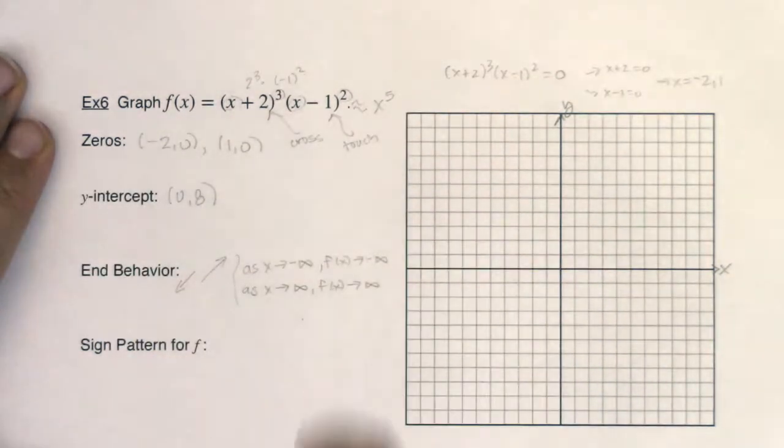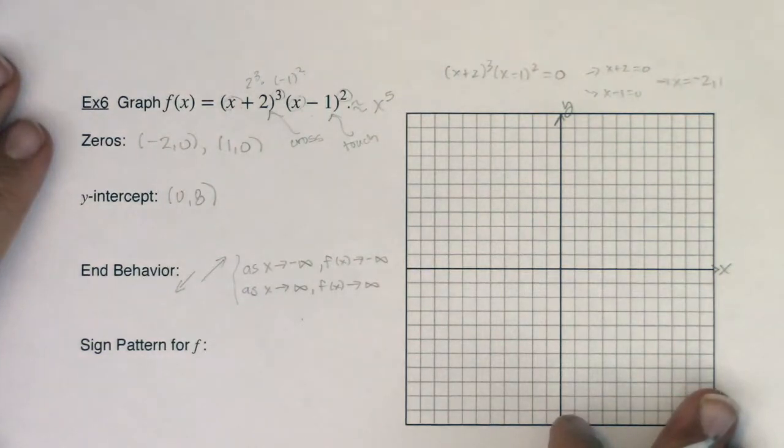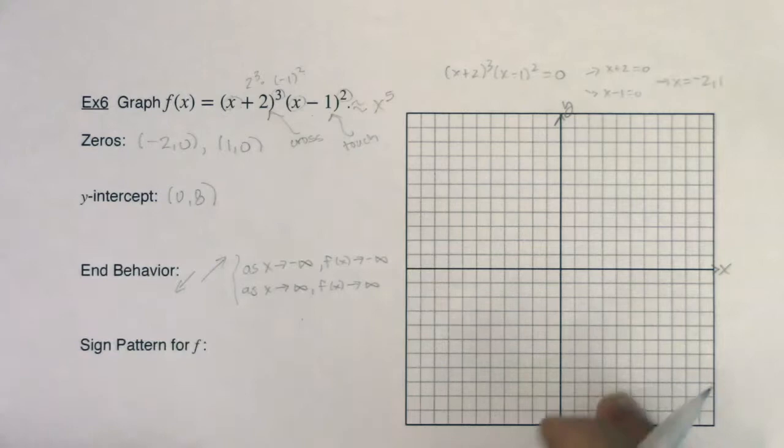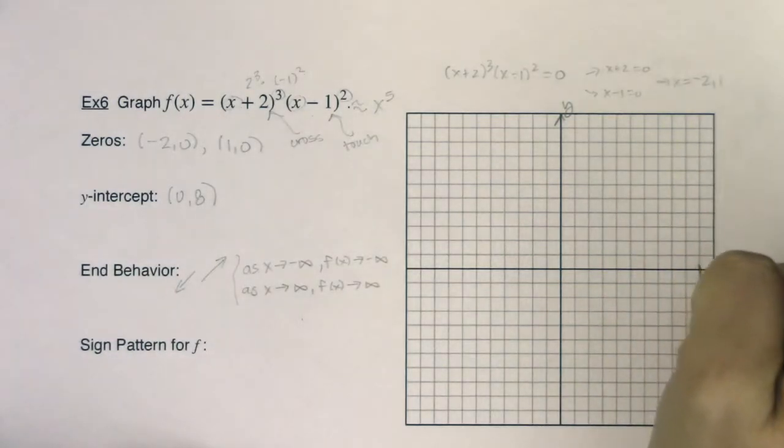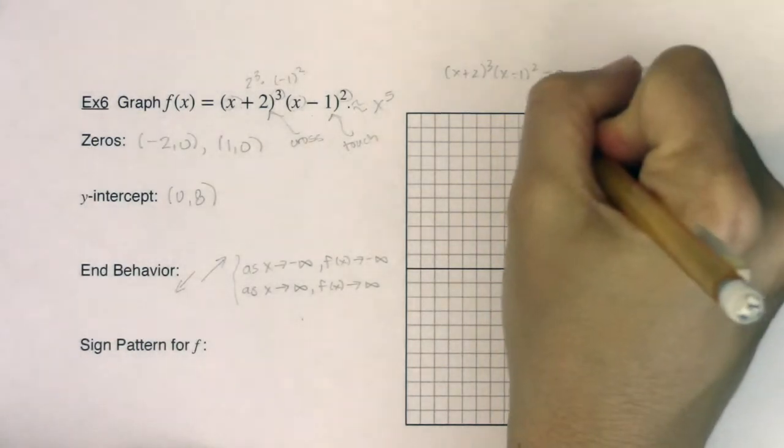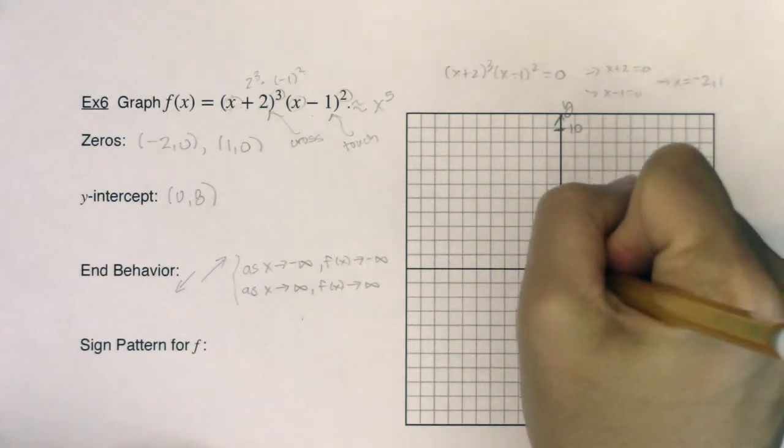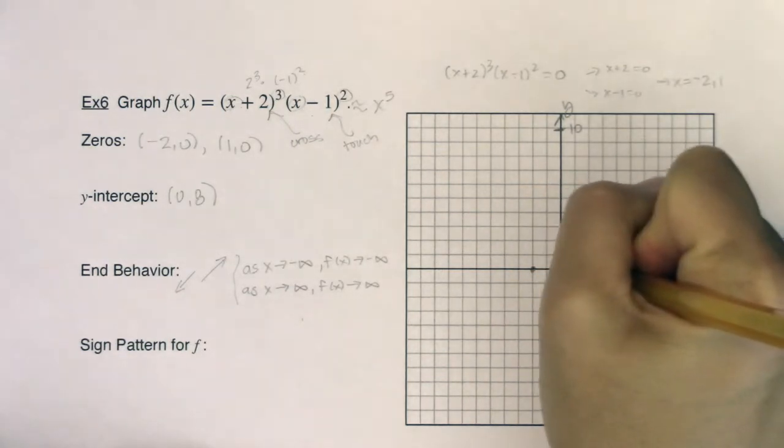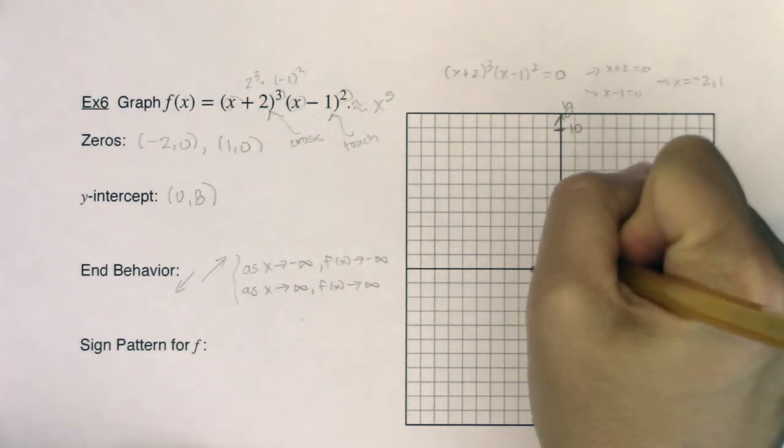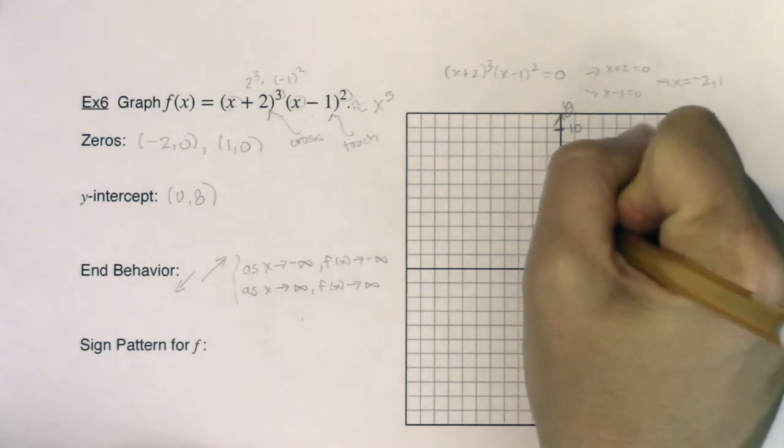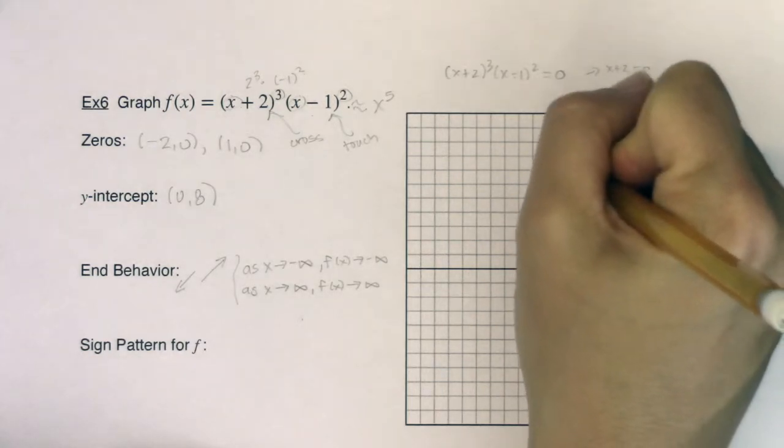So with all of that, I can make a pretty solid graph. So let me just scooch this up. Actually, we have plenty of room. I can leave it here. So let's go ahead and label and scale our axes. I've got a 10 and a 10. So we've got negative 2, 0, and 1, 0, and then 0, 8. 1, 2, 3, 4, 5, 6, 7, 8.